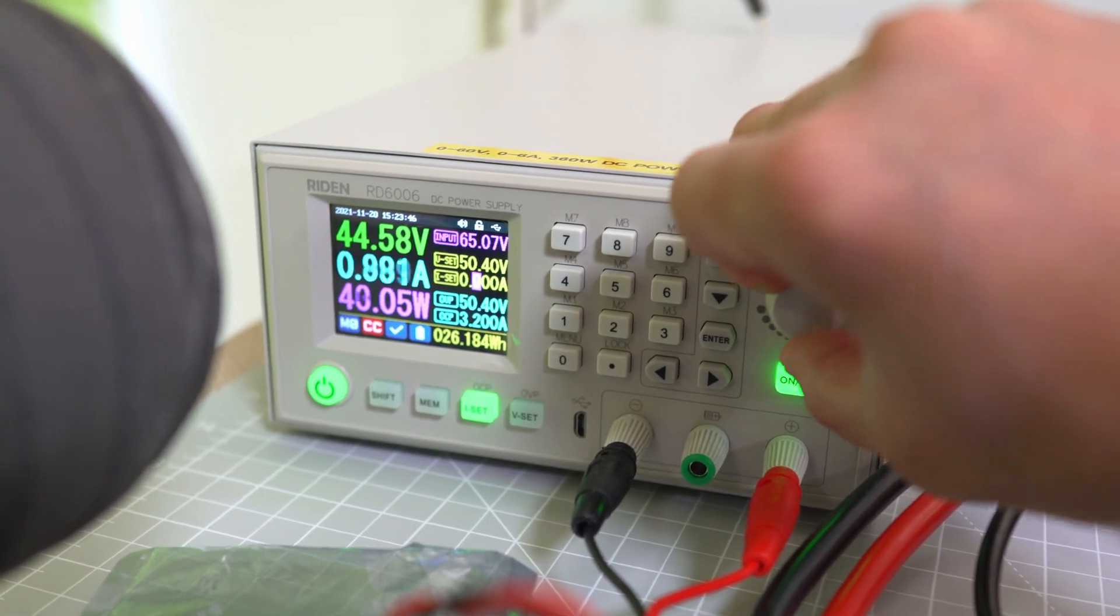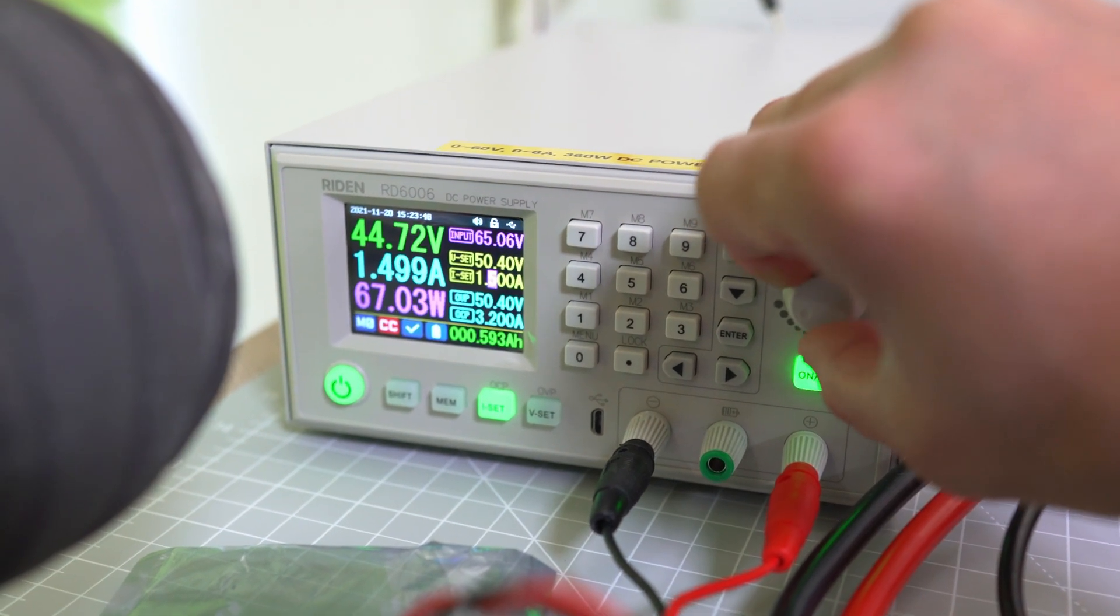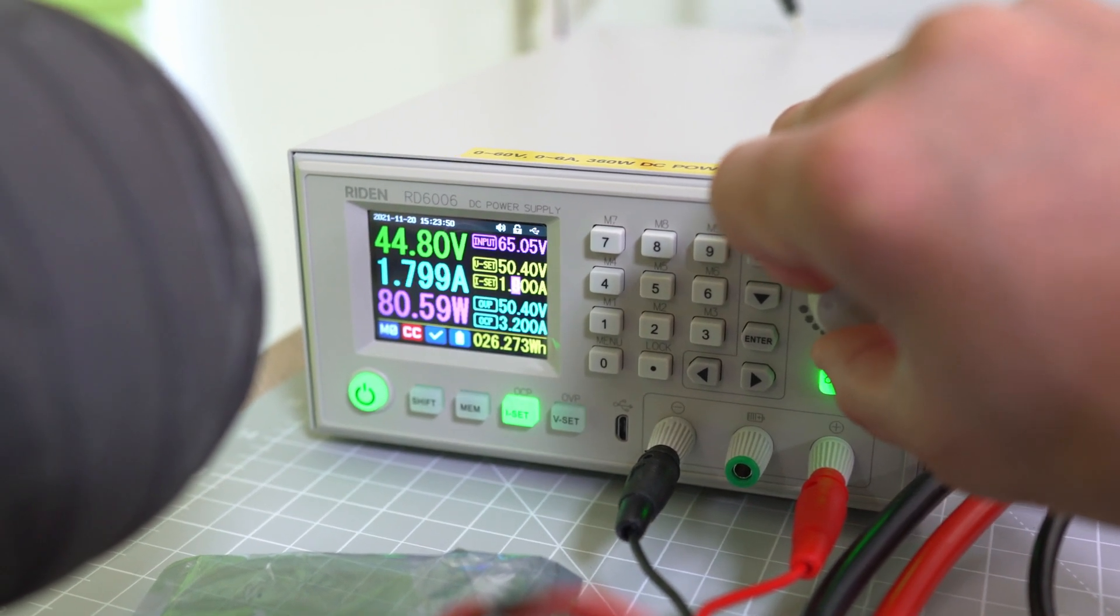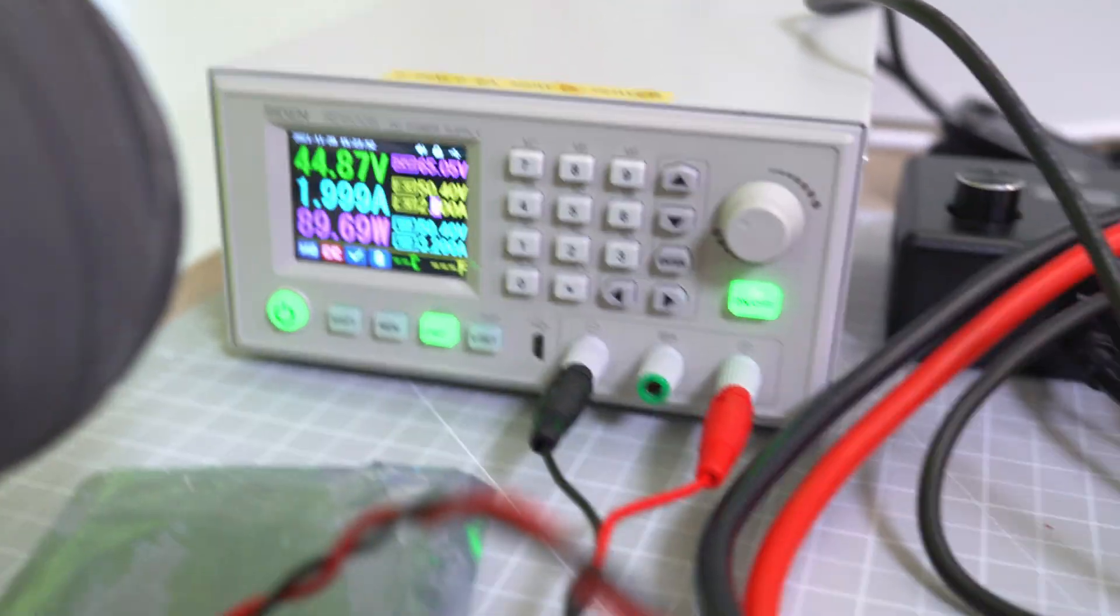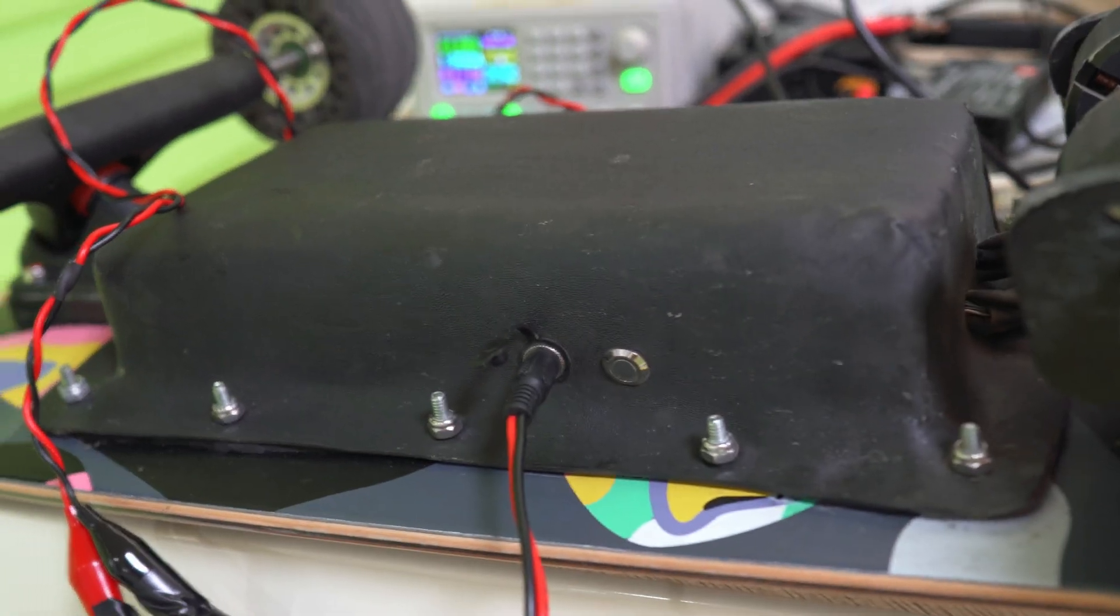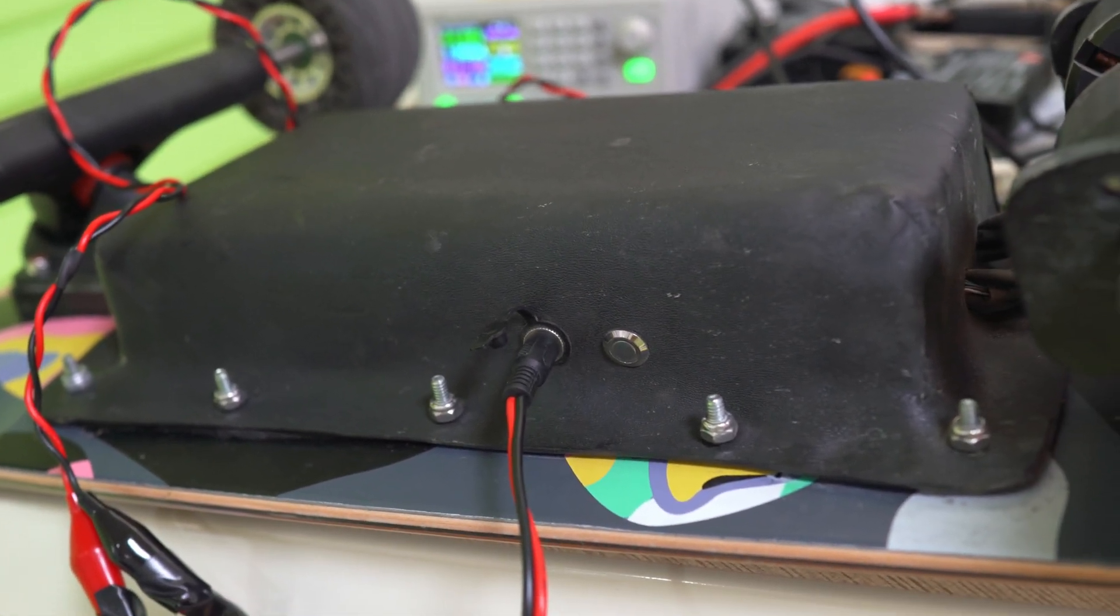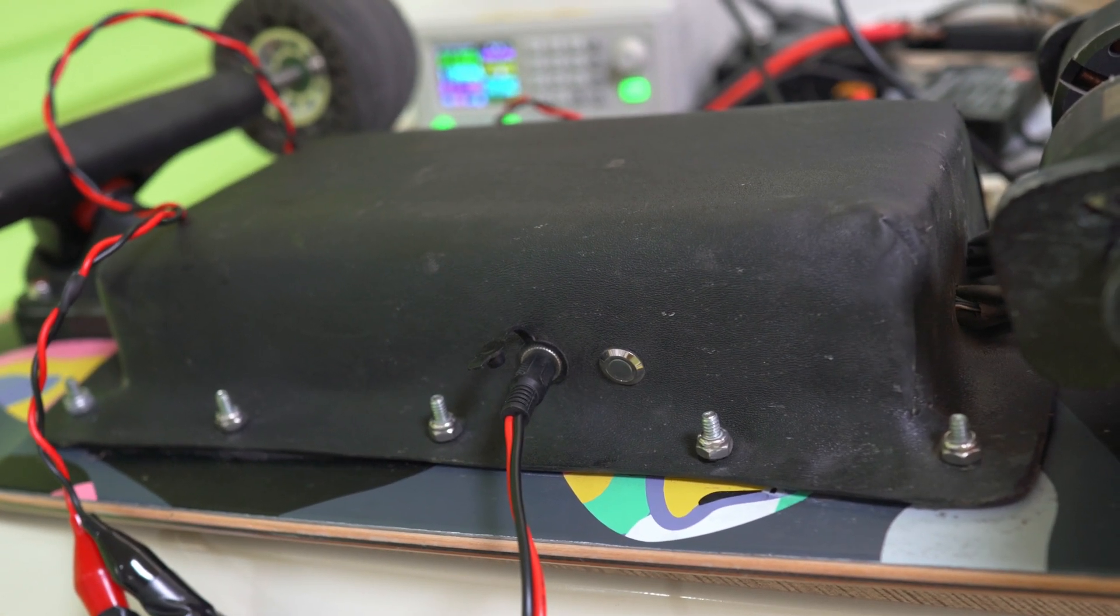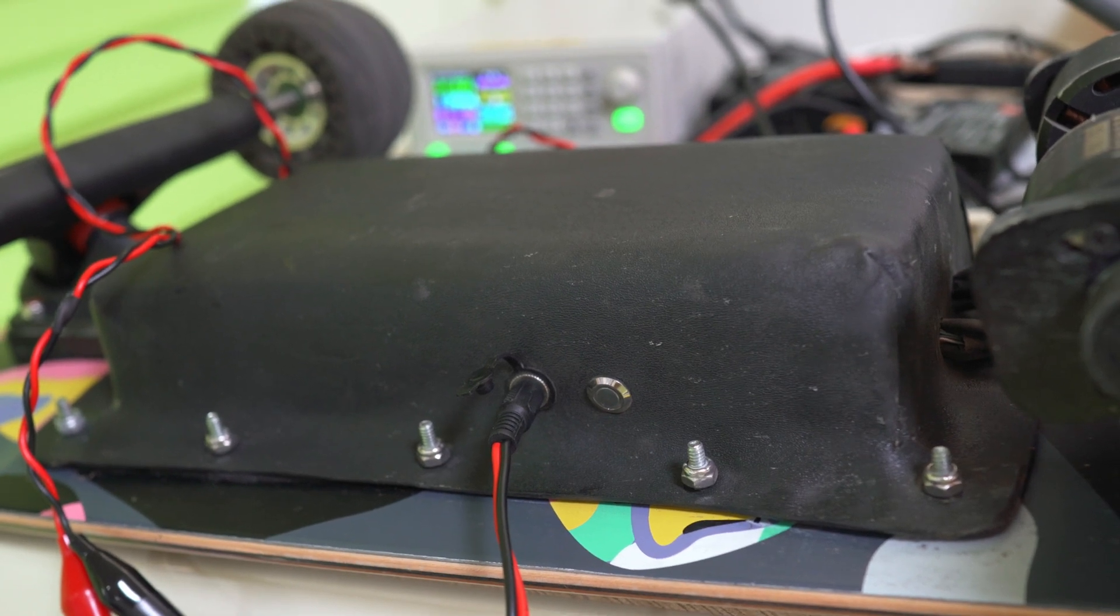I like to set it at about 2 amps for right now. This is a battery I haven't ridden for a long time. It's been sitting at around 50%, and when you want to store your lithium ion batteries or your electric skateboard for more than two weeks,